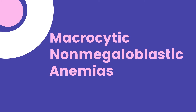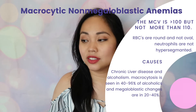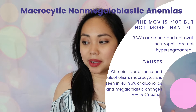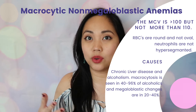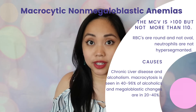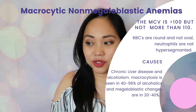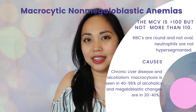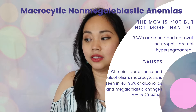Macrocytic non-megaloblastic anemias have an MCV greater than 100 but not more than 110. The RBCs are round — not macro-ovalocytes — just bigger, and the neutrophils are not hypersegmented. The main causes are liver disease and alcoholism.